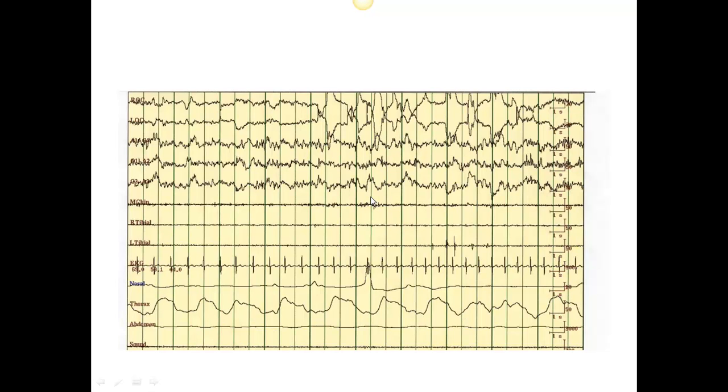Here is an example of stage R or REM sleep. What we see here is a reduction in the amplitude in the chin, a slowing of the frequency of the background EEG, and rapid quick eye movements. We don't always have to have eye movements to score an epoch of REM, but this makes it real obvious.